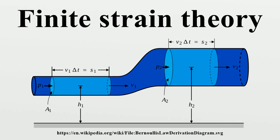The material deformation gradient tensor is a second-order tensor that represents the gradient of the mapping function or functional relation which describes the motion of a continuum. It characterizes the local deformation at a material point with position vector, i.e., deformation at neighboring points, by transforming a material line element emanating from that point from the reference configuration to the current or deformed configuration. Assuming continuity in the mapping function — the differentiable function in time — this implies that cracks and voids do not open or close during the deformation.